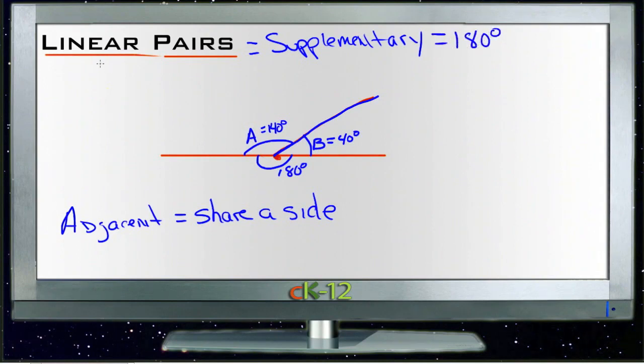But if they're linear pairs, then they are specifically adjacent and supplementary. They equal 180 degrees and they're also side by side, and they share one side of the angle. So that's really the difference between adjacent supplementary angles and linear pairs.